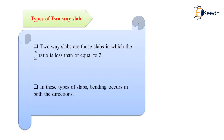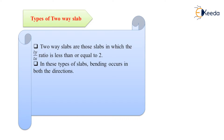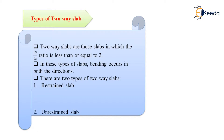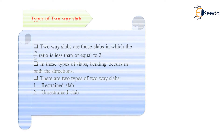In these types of slab, bending occurs in both directions, and hence we provide bars in both directions. There are two types of two-way slabs: number one is restrained slab and number two is unrestrained slab.